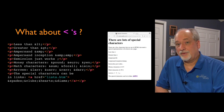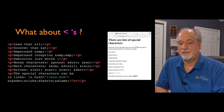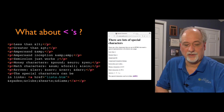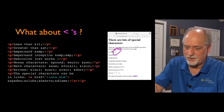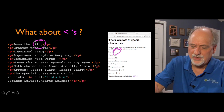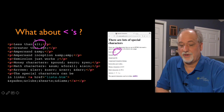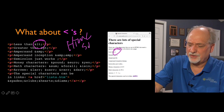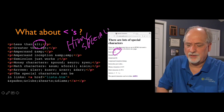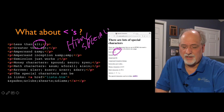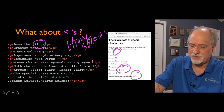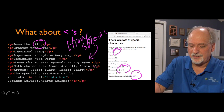Since less-than, greater-than, and other characters are special in HTML, we need a way to print them. We use HTML character entities: ampersand-LT-semicolon for less-than, and there's a whole list of these. You can look up HTML special characters — there are some fun ones like card suit symbols and mathematical characters. You don't need to memorize them all; you just go look them up.